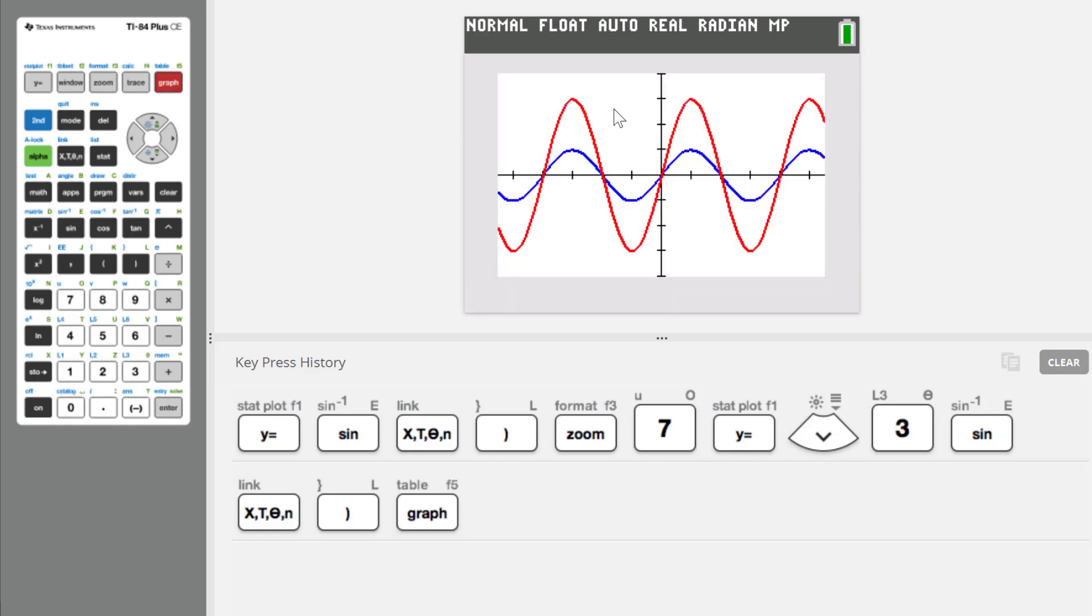And so you can see the blue represents the regular sine function, the one I put in first. And the red one is this second function, y equals 3 times sine x.